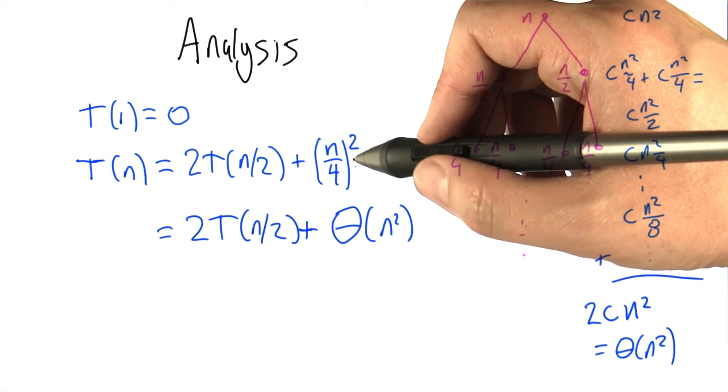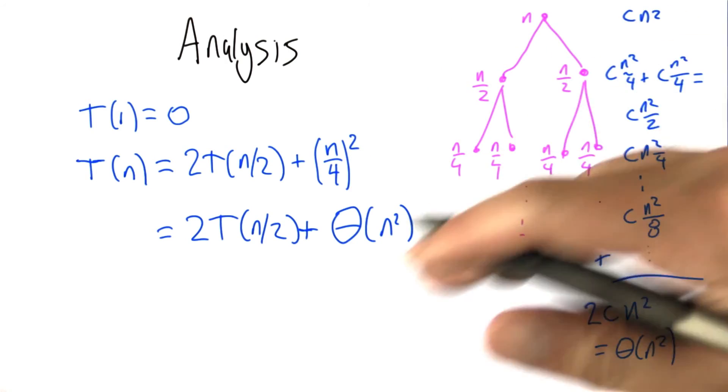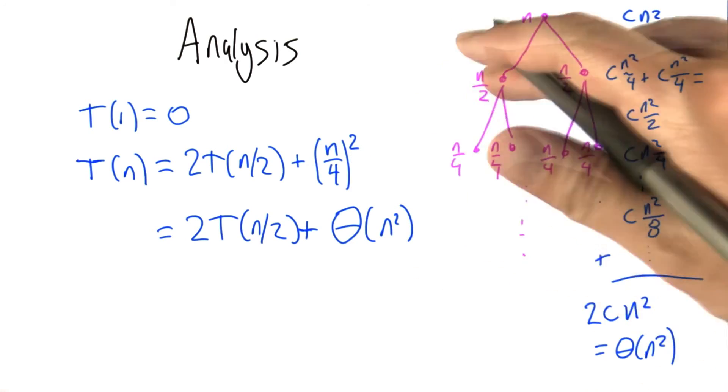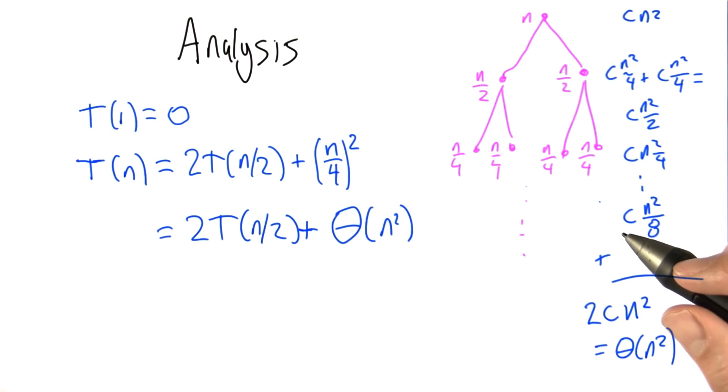Because we do n squared really at just the first level. All the other levels that we do, the amount of work gets cut in half each time, and so even though there's possibly a large number of levels, it doesn't add up to anything more than another constant times n squared.